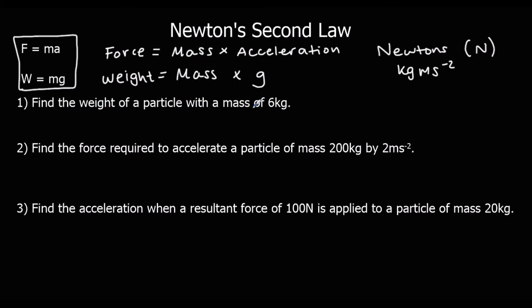Find the weight of a particle with mass 6 kilograms. W equals mg, and mass is 6 kilograms, so W equals 6g newtons. We can always leave an answer in terms of g. If you wanted to substitute in, g is 9.8 meters per second squared, the acceleration due to gravity. You could substitute that in and get a weight in newtons.